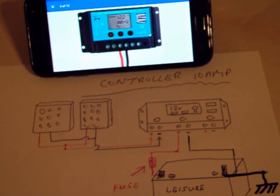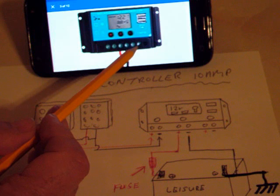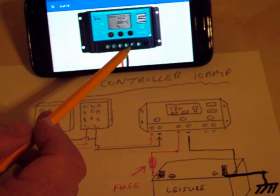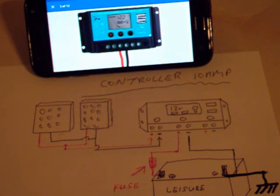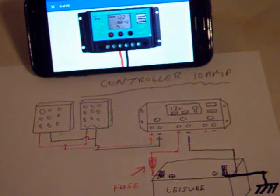Now then a lot of people use this output here. There's a positive and negative output for lighting and things like that. And my advice is straight away don't use them. And the simple reason is because most electrical equipment in your van or motorhome has a negative earth.